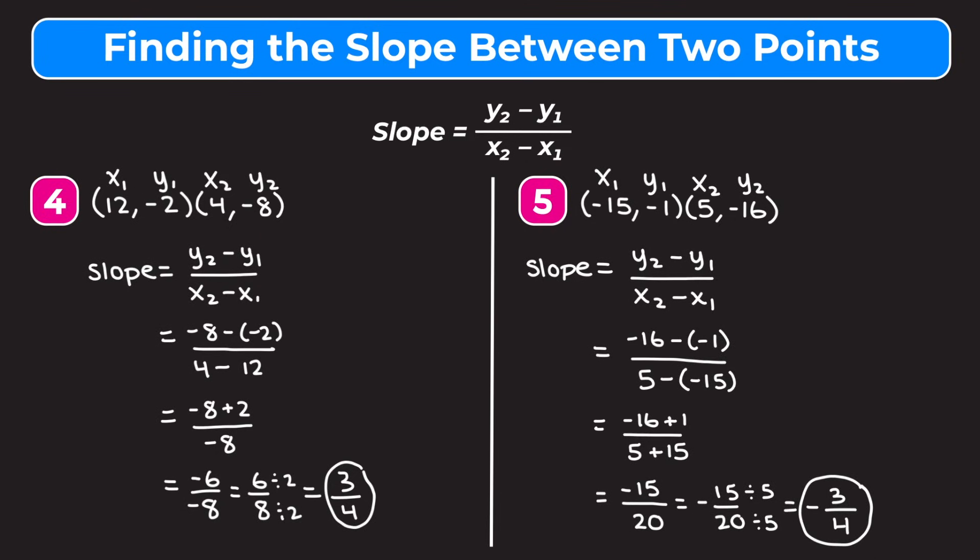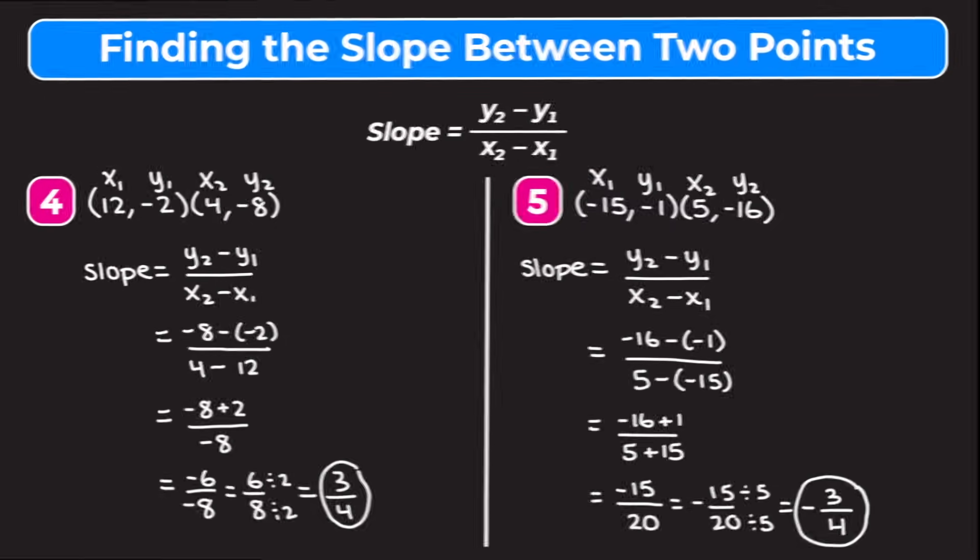Hopefully this video helped you understand how to find the slope between two points. Just remember the formula: slope is equal to y2 minus y1 over x2 minus x1.